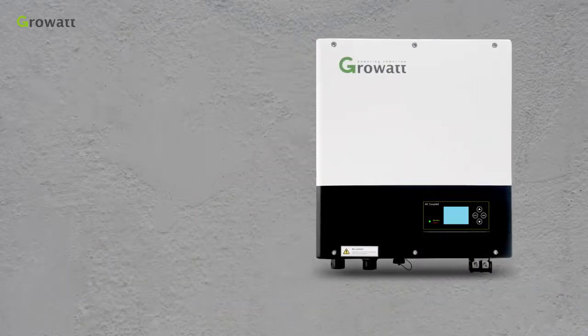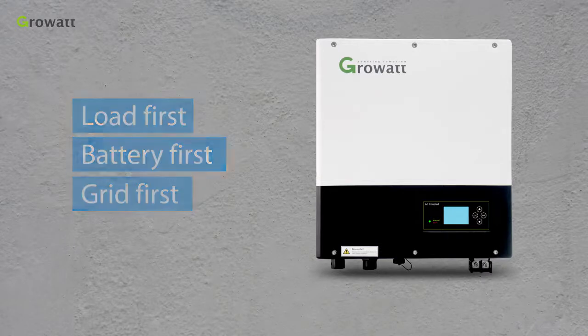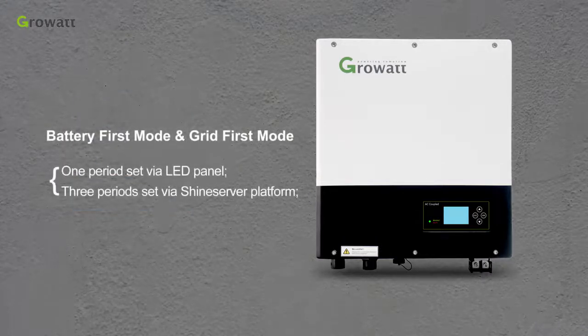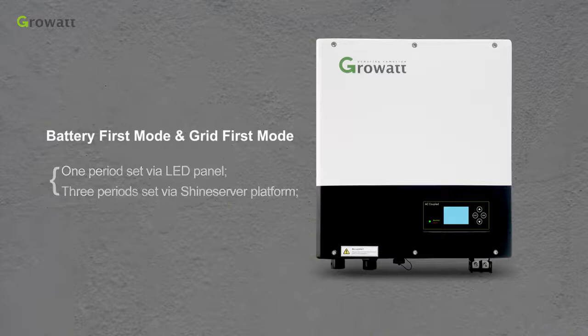SPA can be used in different mode. Load First, Battery First and Grid First. For Battery First and Grid First mode, customer can set the timetable for it. Through LCD can set one time period. Through GrowWatt Shine server can set three time periods each.